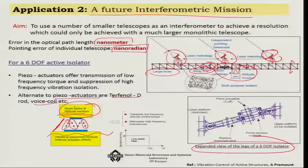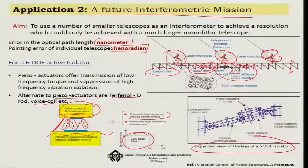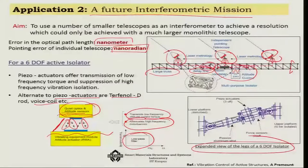Essentially, the Stewart platform works like a low-pass filter — low frequency attitude control torques are transmitted, but all high frequency disturbances are stopped. That is another application of active vibration control.